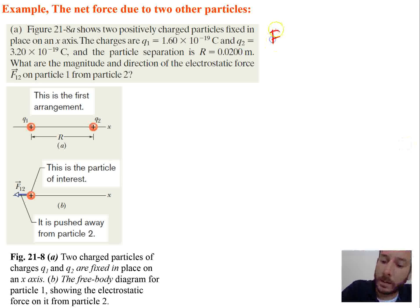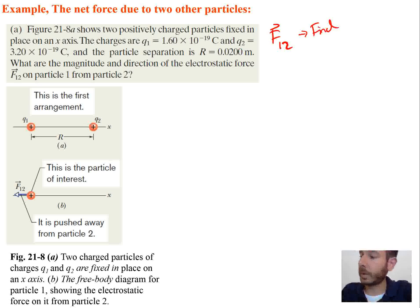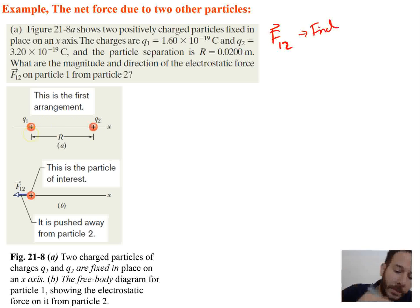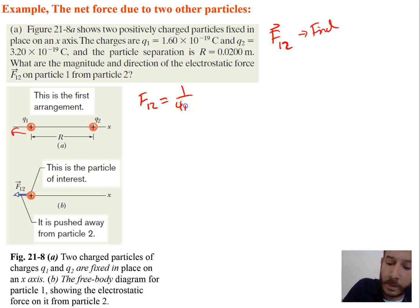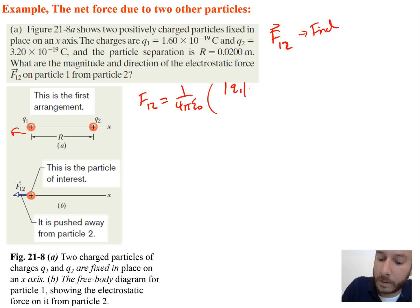We're trying to find F12, and we're going to use Coulomb's law. For the direction, since both particles are positively charged, the force of Q2 on Q1 is going to be to the left — they repel each other. Since everything is on the same plane, we'll use the non-vector form: F equals 1 over 4π times the permittivity constant, times the absolute value of Q1 times the absolute value of Q2, divided by r squared.